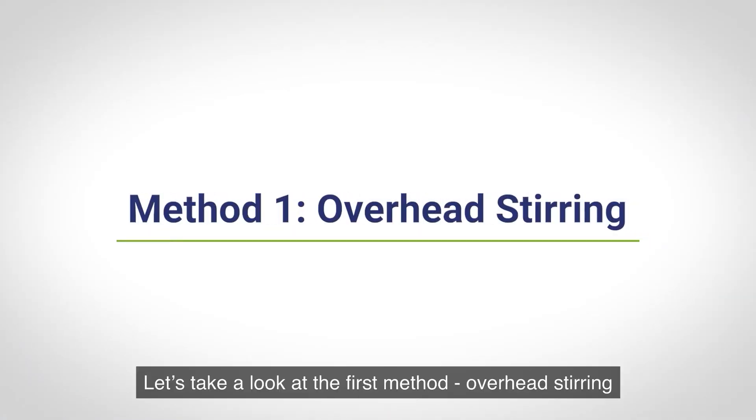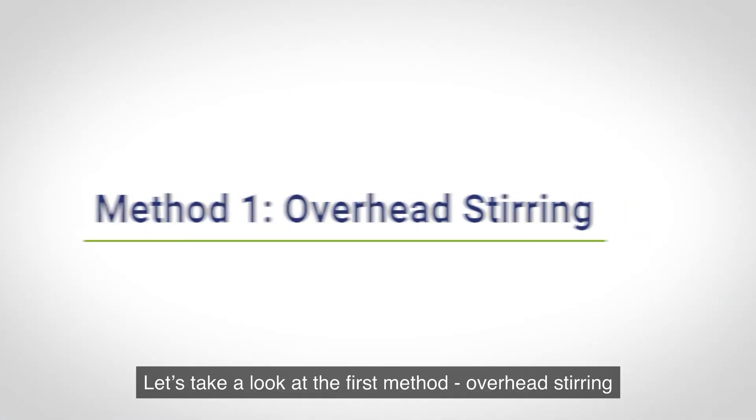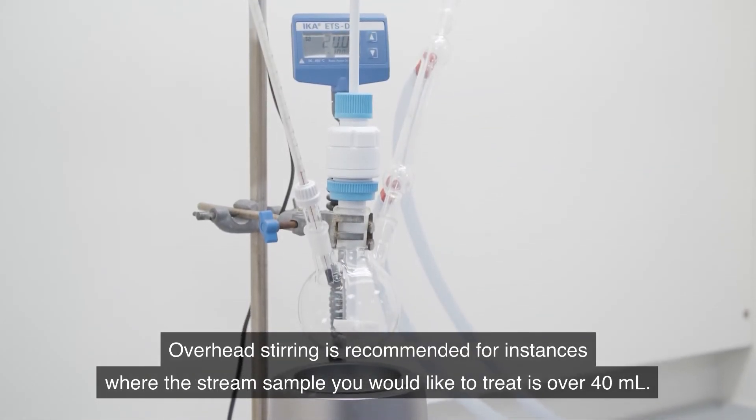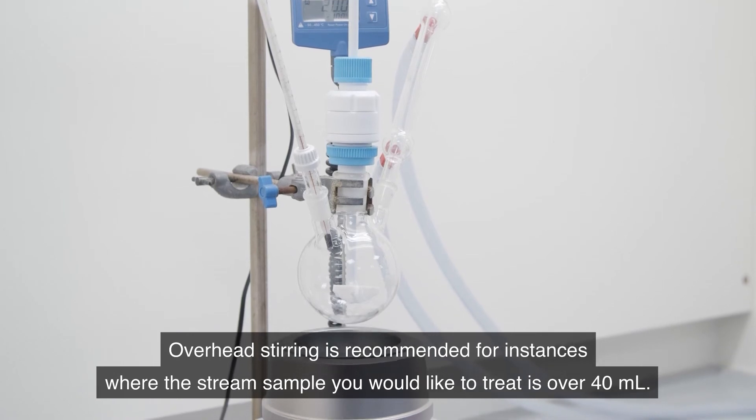Let's take a look at the first method. Overhead stirring. Overhead stirring is recommended for instance where the stream sample you would like to treat is over 40 mils.